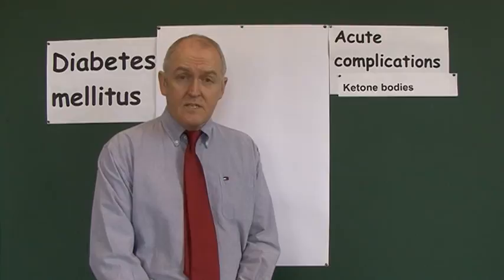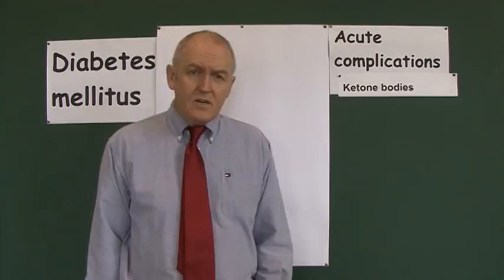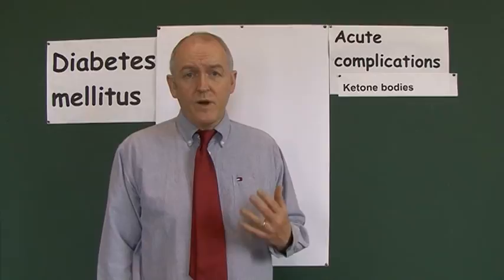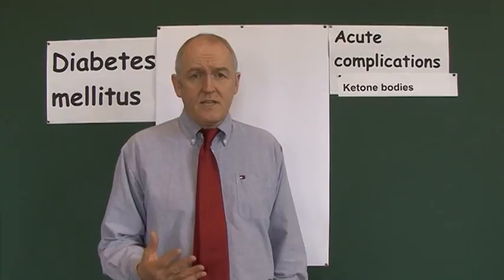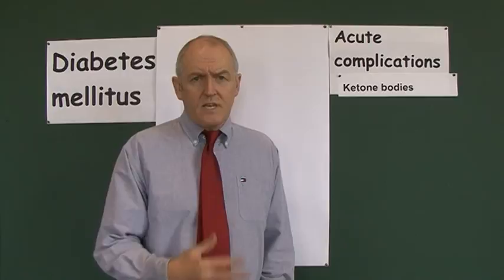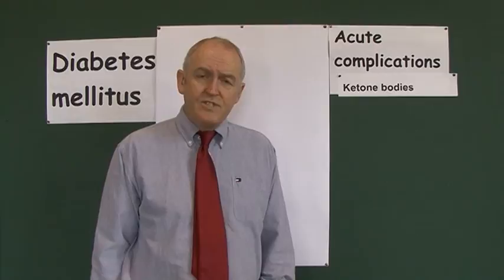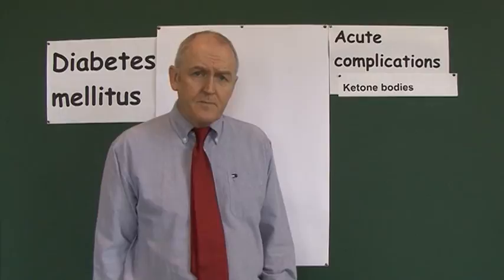Diabetic ketoacidosis is an acute complication of type 1 diabetes, and it occurs when there is a deficiency of insulin. If there's not enough insulin for whatever reason, then ketone bodies will start to accumulate in the blood — there will be a ketoacidosis. This can occur at presentation: if someone didn't know they were type 1 diabetic, they wouldn't be taking insulin, and when they present into our care they can be in a diabetic ketoacidotic state.